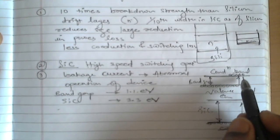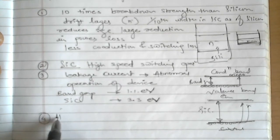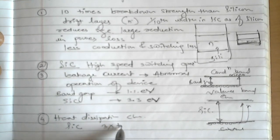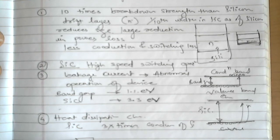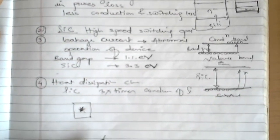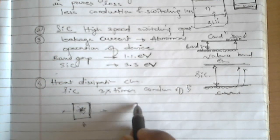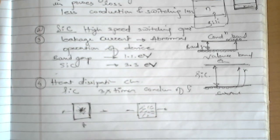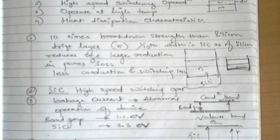The fourth advantage of SiC is good heat dissipation characteristics. SiC devices have almost 3 times the thermal conductivity of silicon. This means heat gets dissipated very fast. It also has less conduction loss because of this high conductivity. So heat easily gets dissipated, and these are some key characteristics of SiC devices, which is why we have started using SiC devices more in power semiconductors.